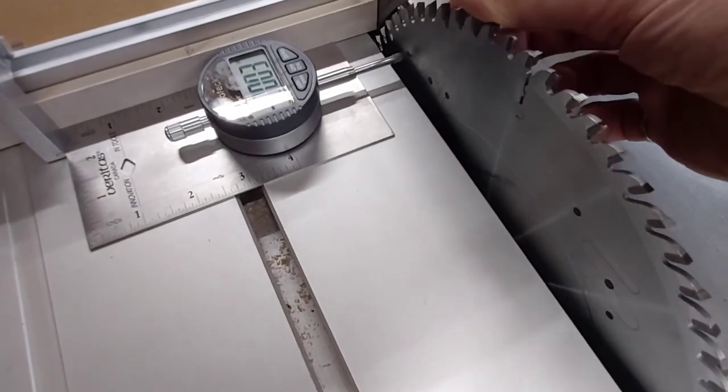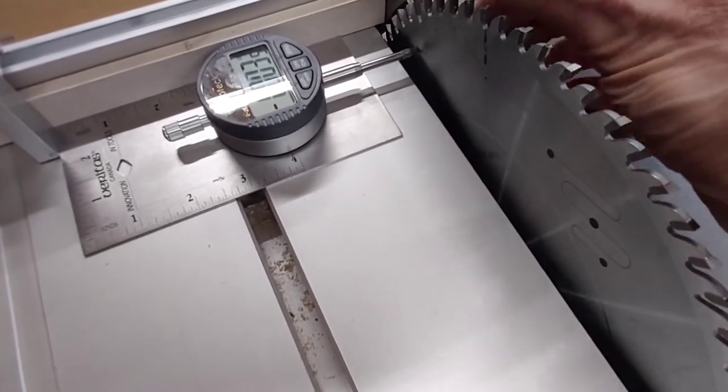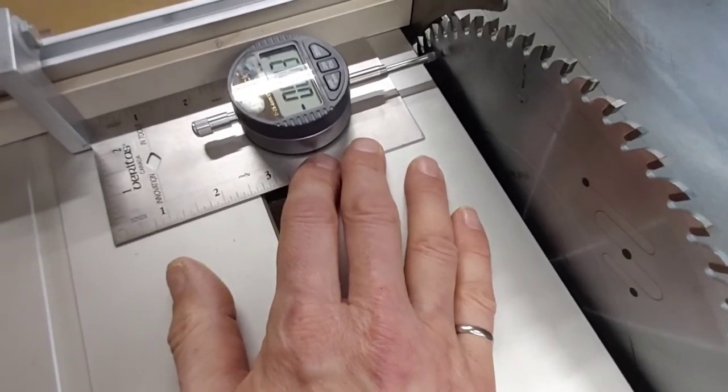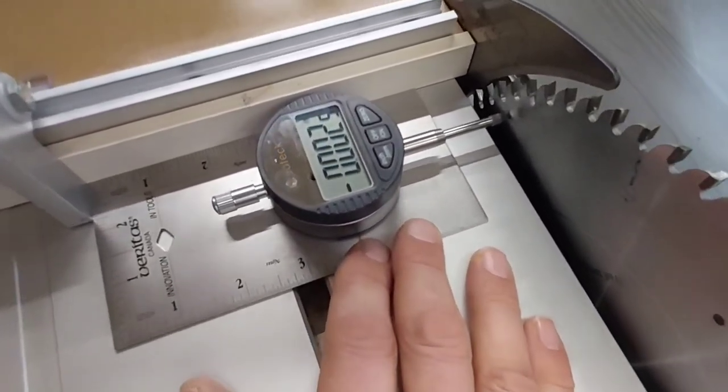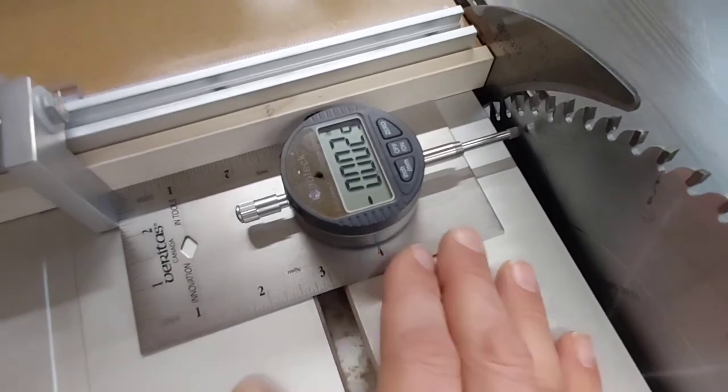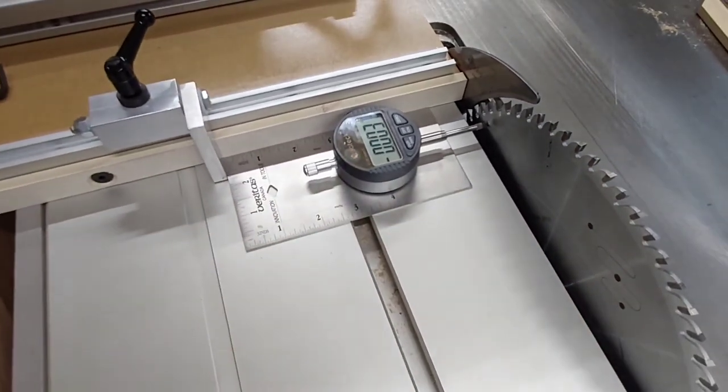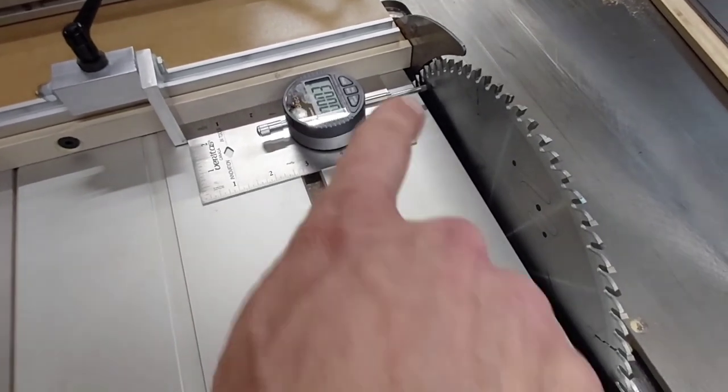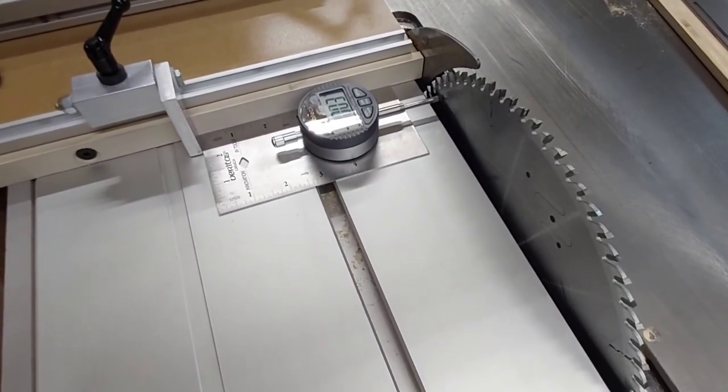If I do that, I'm now at about two and a half thousandths. So I've got about two and a half to three thousandths of toe-out, which I think is just right over that 12 inch span of the blade.